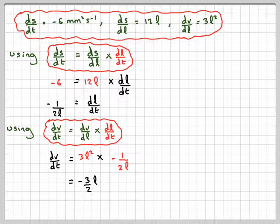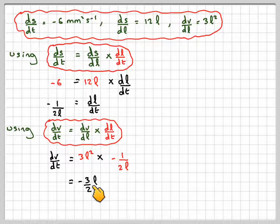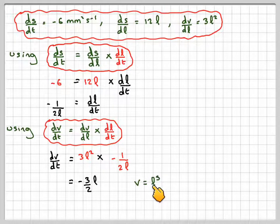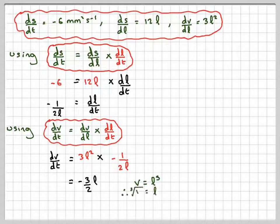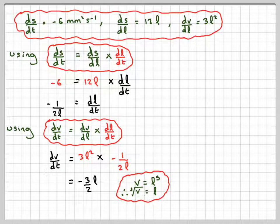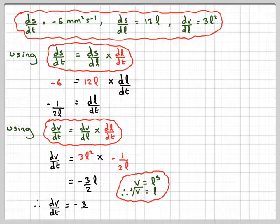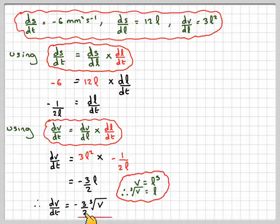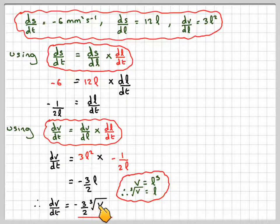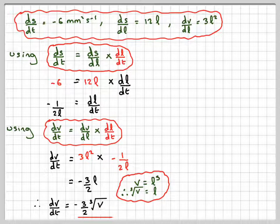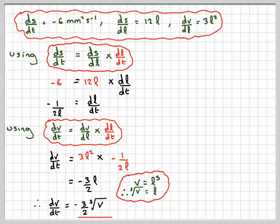We are told to write this differential equation in terms of V only. So we can say that dv by dt will be minus 3 over 2 times the cube root of V. So that's part A.